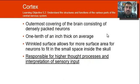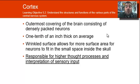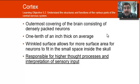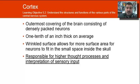The outermost part of the brain — the thing you see when you think of a brain — is the cerebral cortex. It's about one-tenth of an inch thick on average, but it's wrinkled to allow for more surface area, packing more neurons in. The cortex is responsible for higher thought processes like thinking, reasoning, and scheduling, and it also interprets sensory input sent by the thalamus.